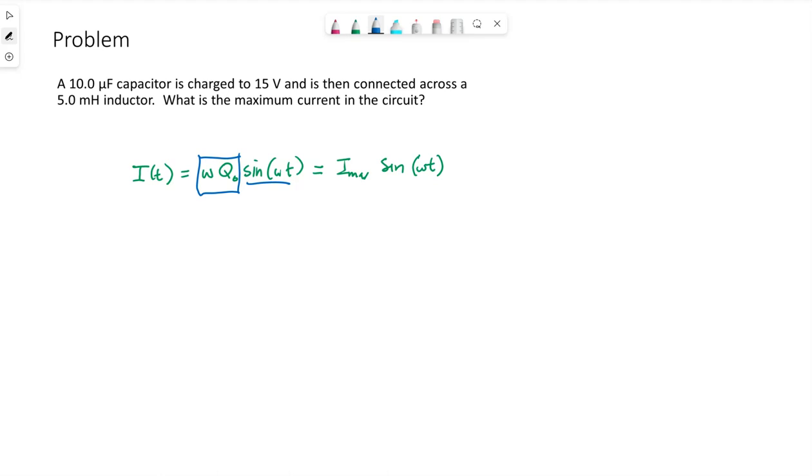This hopefully makes sense because whatever is in front of the sine or cosine function represents the amplitude of that function - the maximum. So since this function describes current, I_max equals ω*q₀.